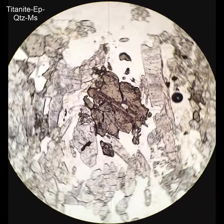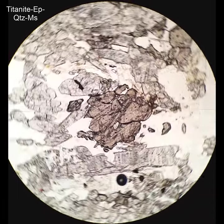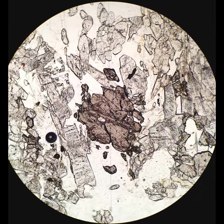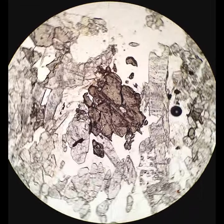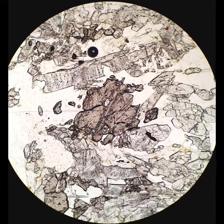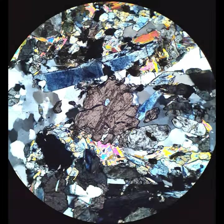This illustrates many of the optical properties of titanite. Super high relief, kind of brownish, maybe has either some pleochroism or some variable relief, but much higher relief than the epidote, which is much of the rest of the high relief material around it.